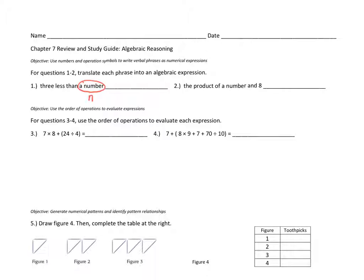When we say 'three less than a number,' the phrase 'a number' indicates our variable. A number could be any number whatsoever, so I'm going to replace that with the variable n. Three less than a number means I'm going to subtract from that number, so my expression is n minus 3. You can test your answer by choosing a number — for example, if n equals 10, three less than 10 is 7, and 10 minus 3 is indeed 7.